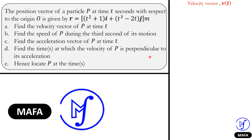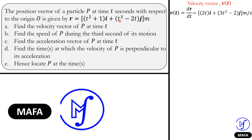The velocity of the particle at time t is the first derivative of its position vector with respect to t. So differentiating the position vector with respect to time gives you the velocity vector. Differentiating t² + 1 gives 2t for the i component; differentiating t³ − 2t gives 3t² − 2 for the j component. So the velocity vector is (2t)i + (3t² − 2)j meters per second.